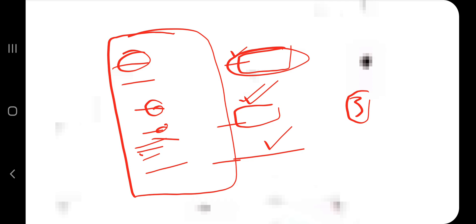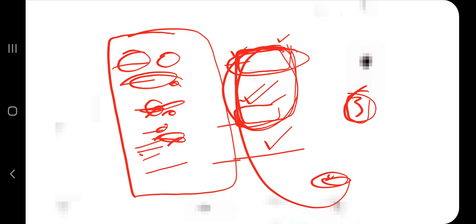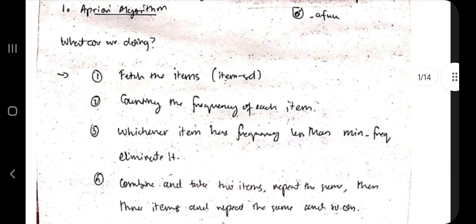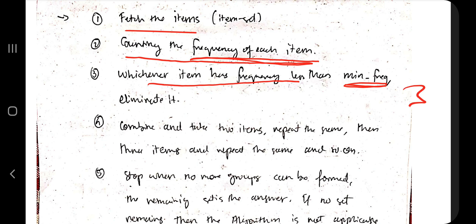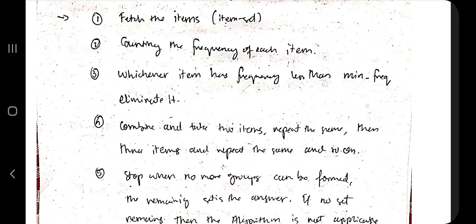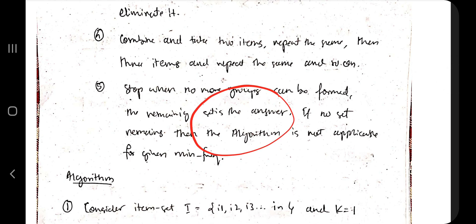After filtering individual items, you combine two items together — for example, noodles and milk — and check how many times they appear together. That combined count must also be greater than the minimum threshold (e.g., three). If three items appear together, you check those together too. You repeat this until all items are considered, and whichever item set remains till the last is the most frequent item set.